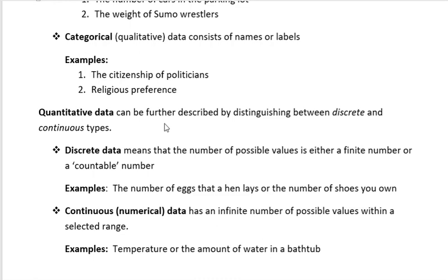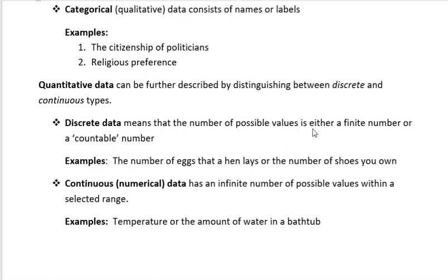Quantitative data can be further described by distinguishing between discrete and continuous types. Discrete data means the number of possible values is either a finite number or a countable number. Examples include the number of eggs that a hen lays or the number of shoes you own.